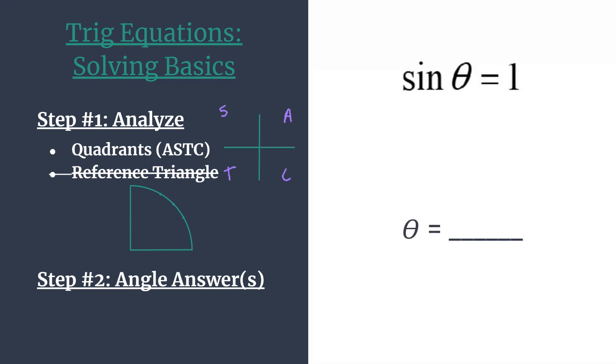So again, we're solving sine theta equal to one, and let's start with our analysis. So recall that on the unit circle, sine is going to be the y coordinate or your vertical motion. And so we are looking for where the y coordinate is equal to positive one. And there's only one angle where that's true.